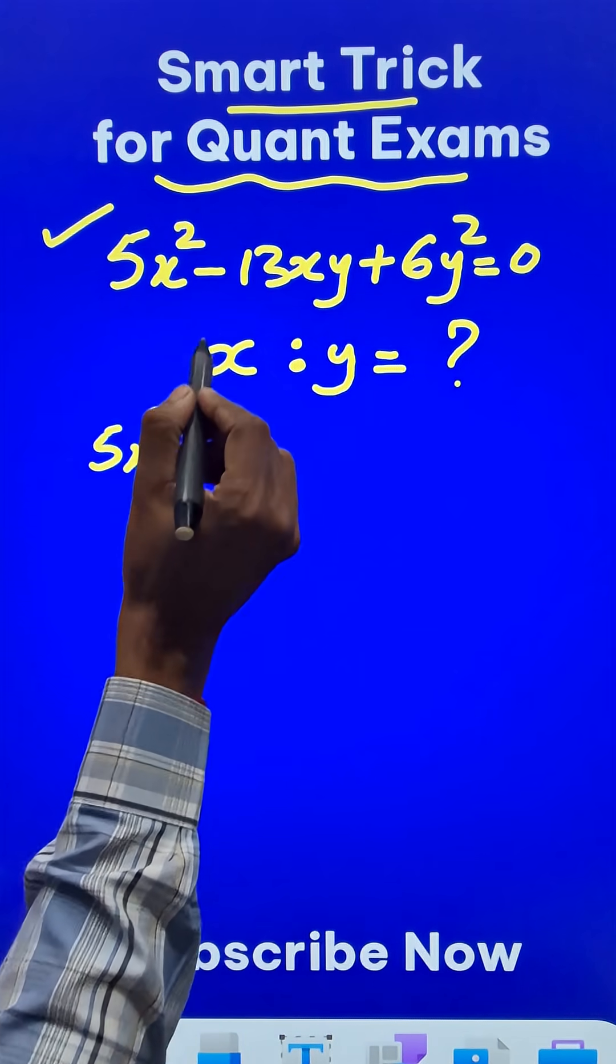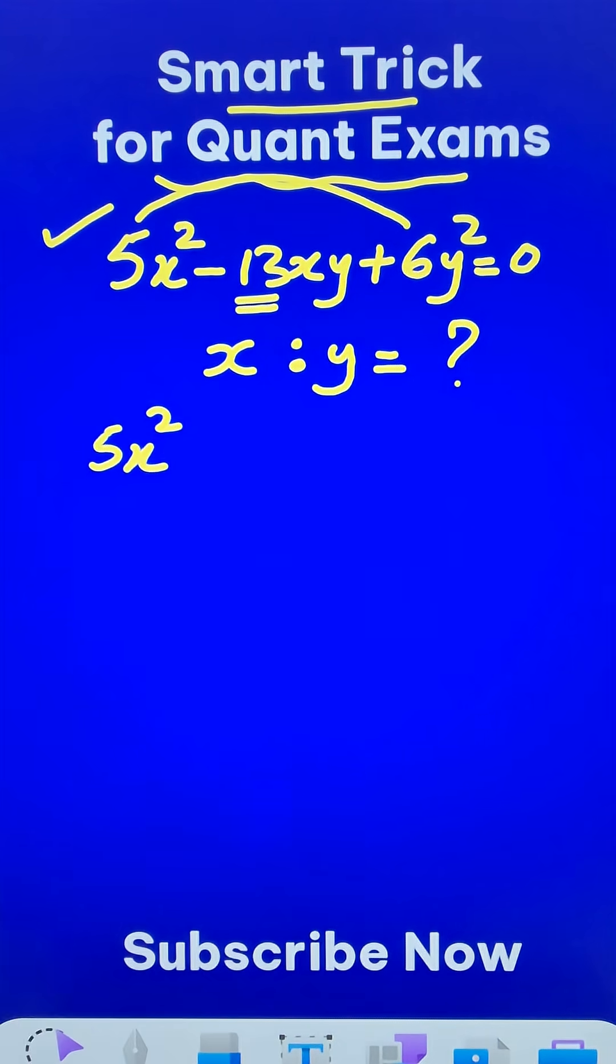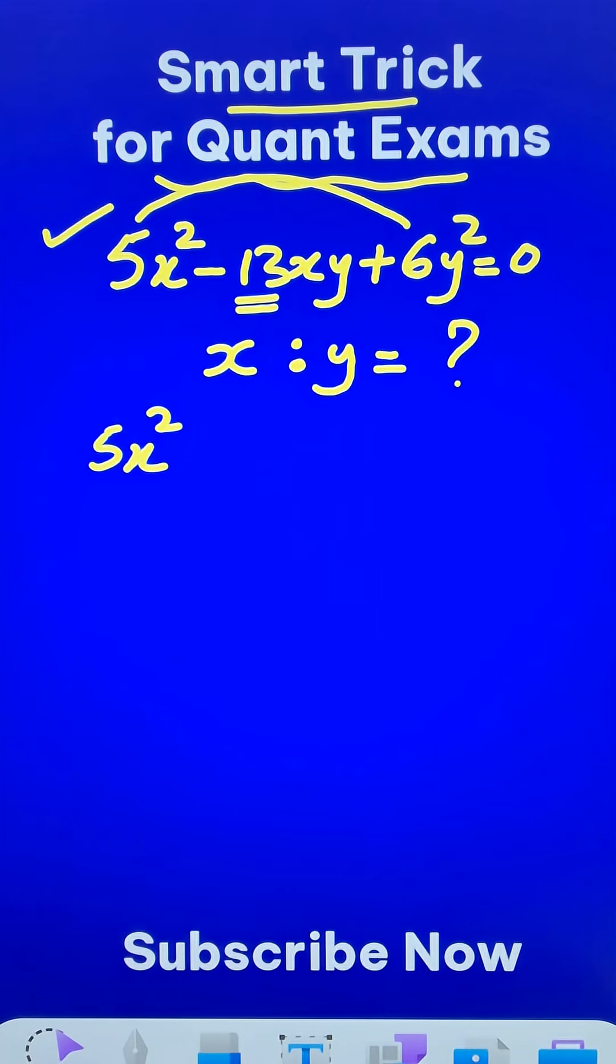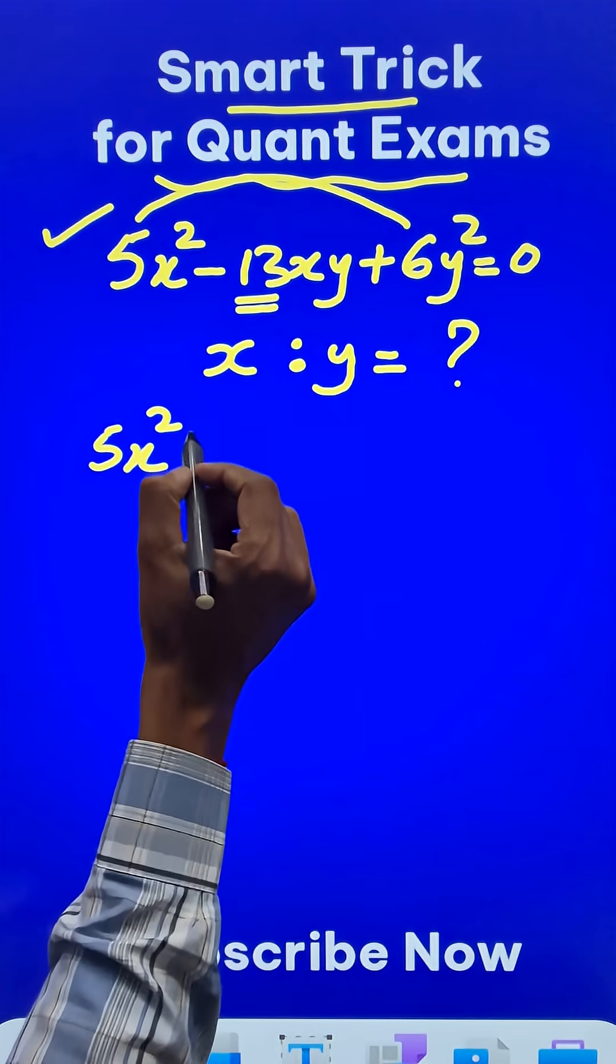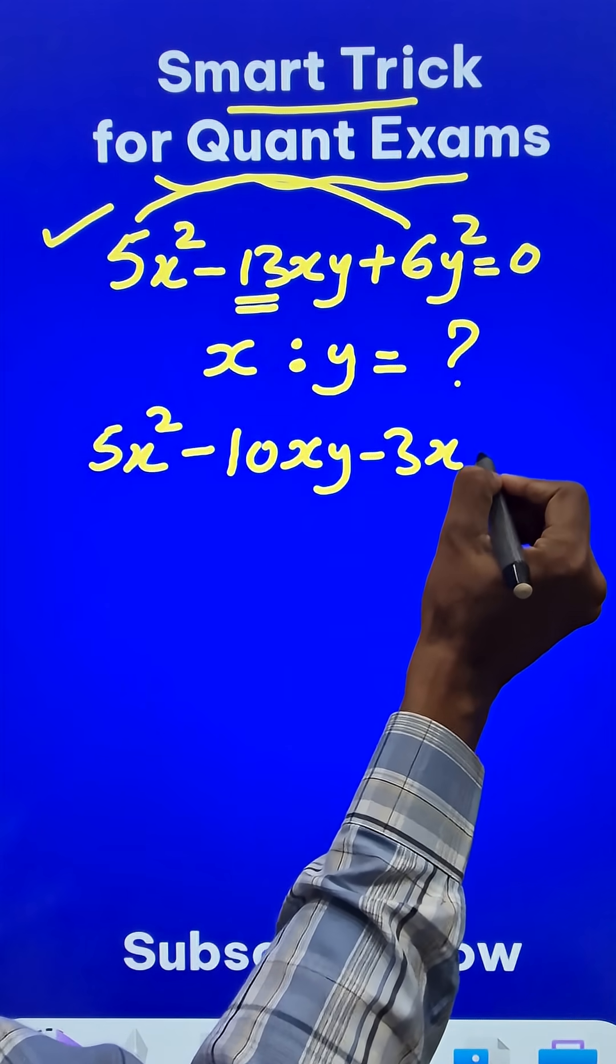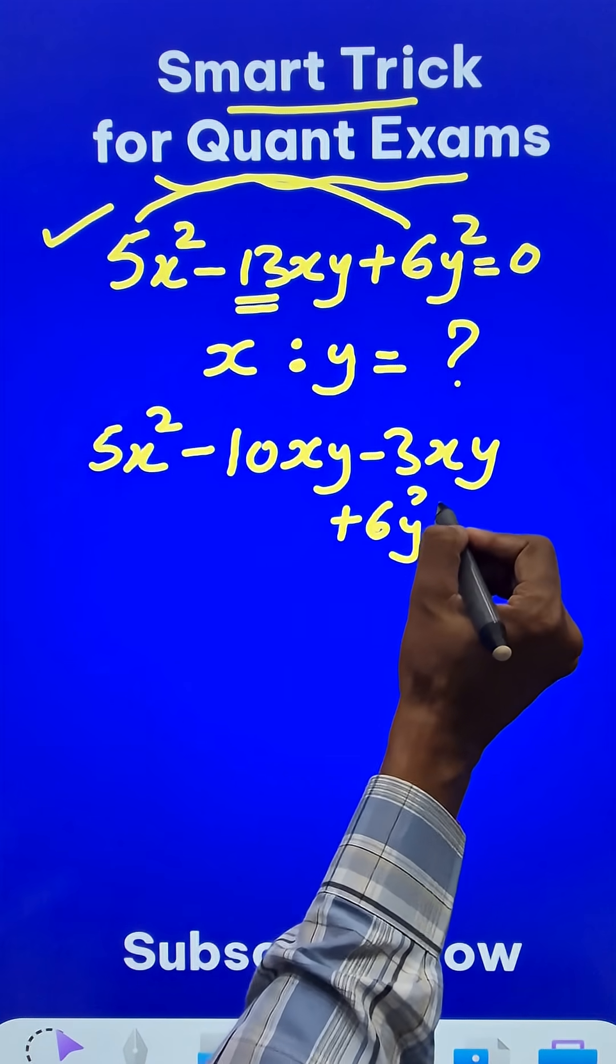So 5x² negative 13 and we have to get 6×5 is 30. So the factors we can find directly are 10 and 3. So minus 10xy and then minus 3xy followed by plus 6y² equal to 0.